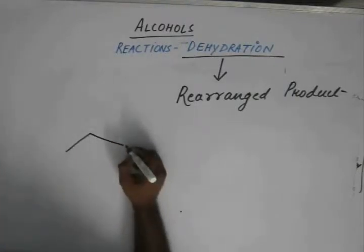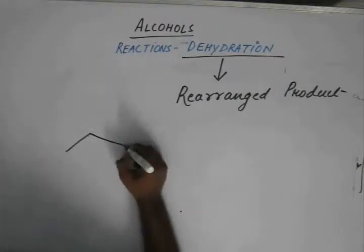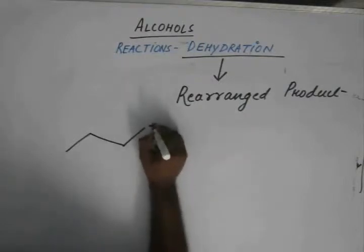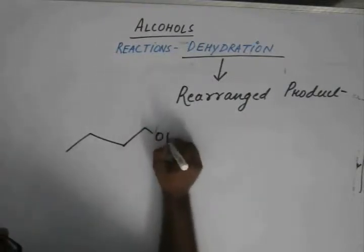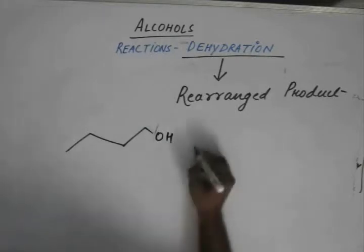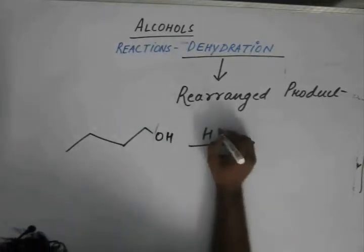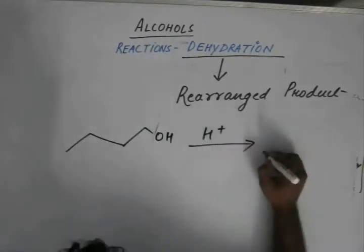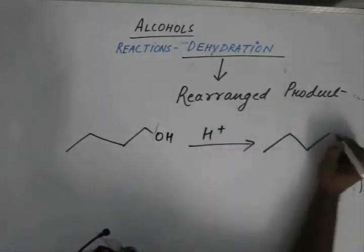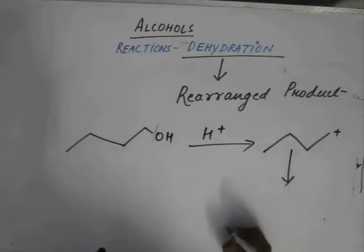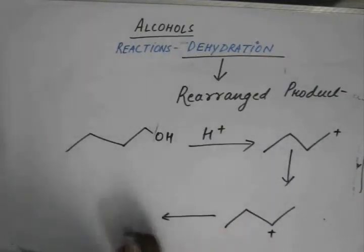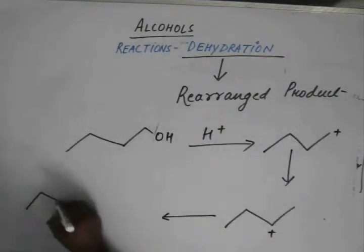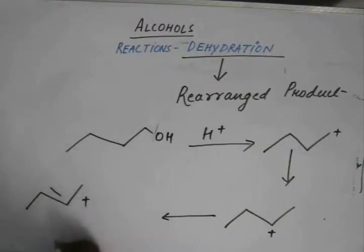Let's suppose we have an alcohol like this — 1-butanol. I would take this up a little bit faster. We get a carbocation like this, it rearranges and we get this cation product like this.